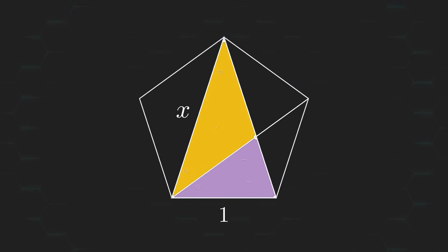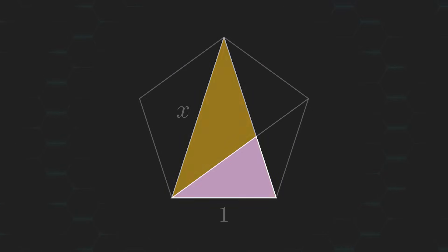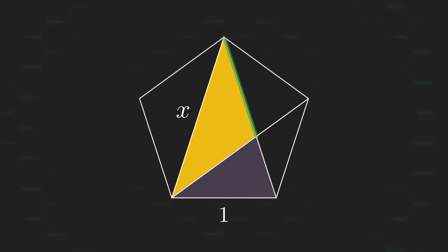And this is where things get interesting. We just created three different isosceles triangles. And what's something we know about isosceles triangles? Well, their legs must both be of the same length. So, since the leg of this triangle is one unit long, then this length must also be one unit long. And as a result, this length must also be one unit long. Thus, this length here must be x-1.